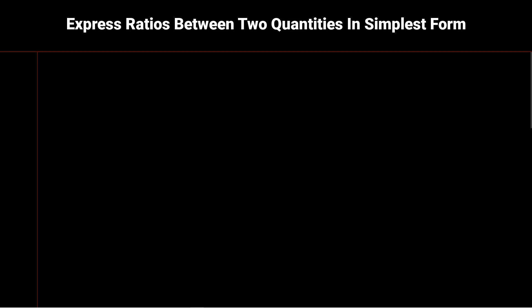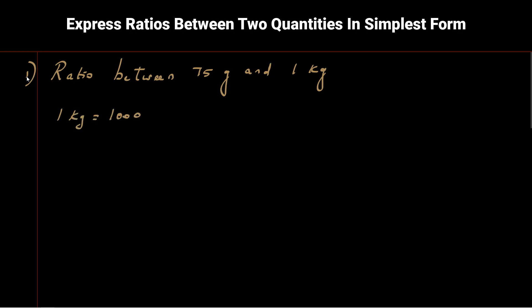The first example: find the ratio between 75 grams and 1 kilogram. We are comparing grams and kilograms, so we need to ensure they are the same unit. We convert the higher unit to the lower unit so that simplification becomes easier. So 1 kilogram is equal to 1000 grams.